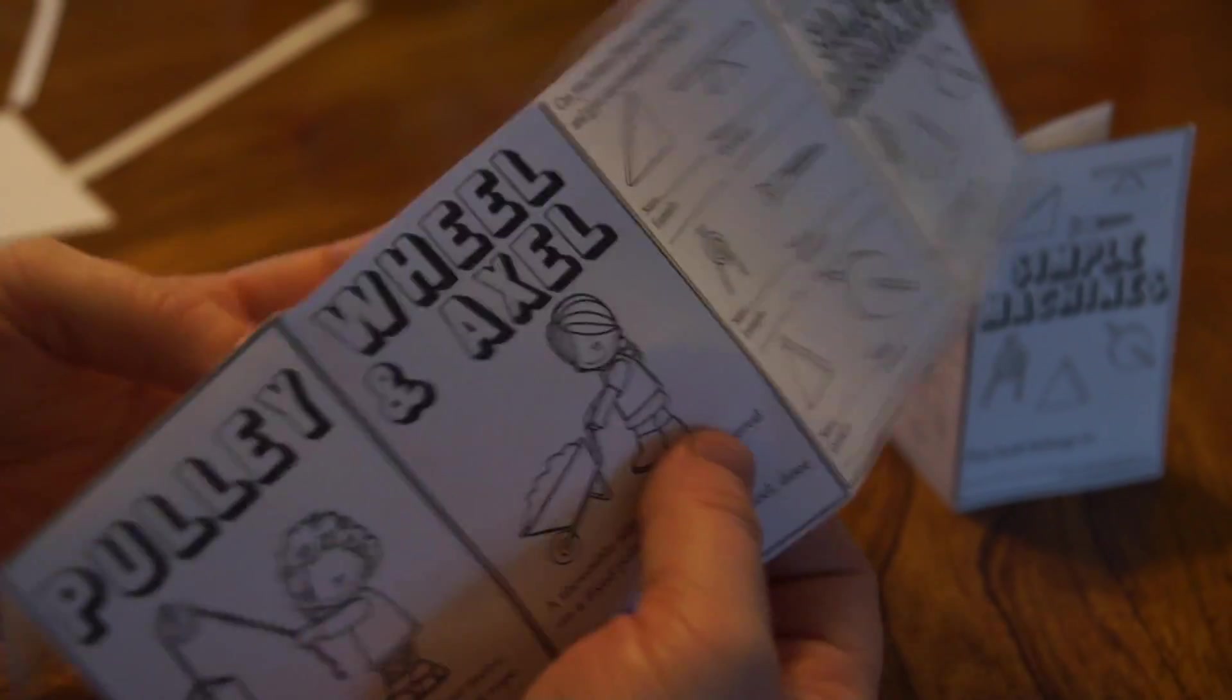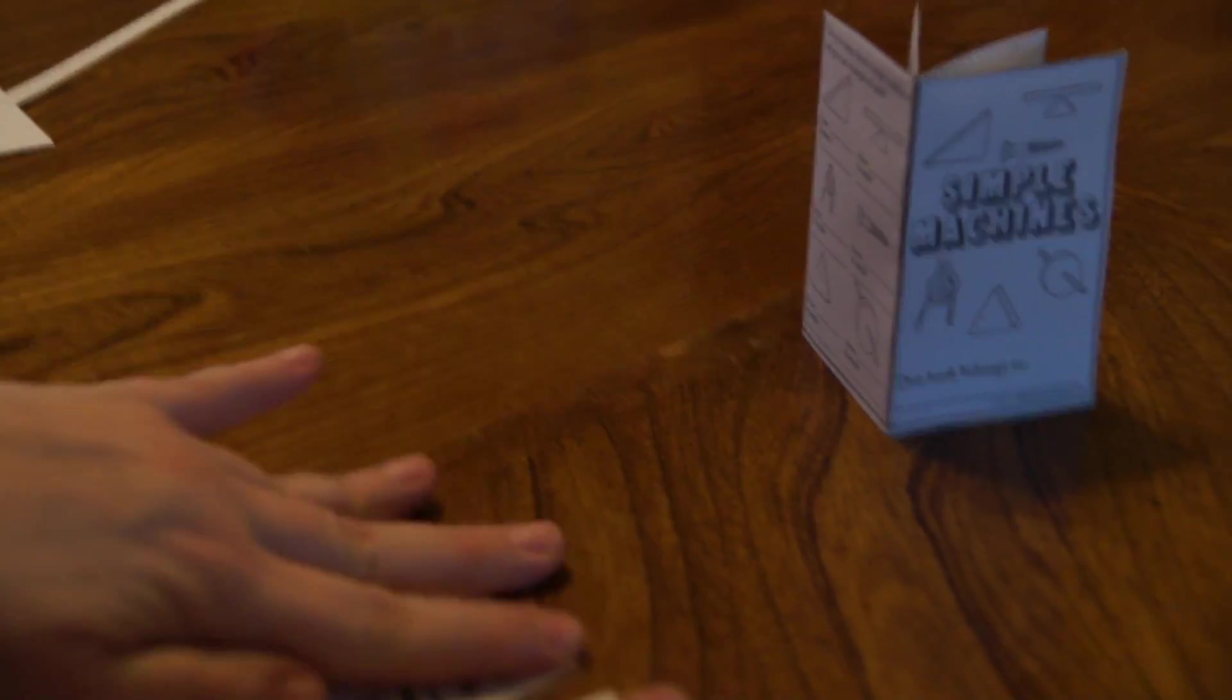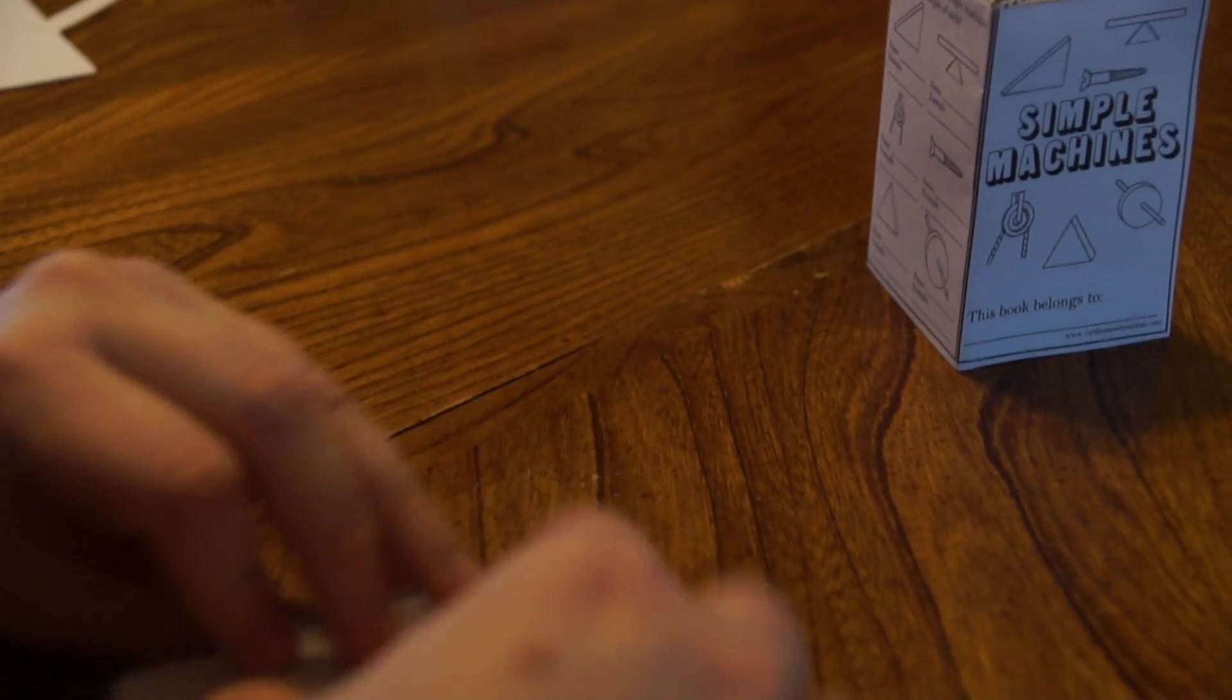Now you're going to fold it back in half. These parts here that you just cut, you're going to pop them out so they come out like that. You have it like this. It folds flat again. Now all you have to do is fold it in.